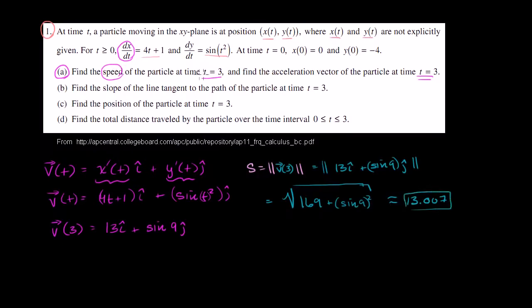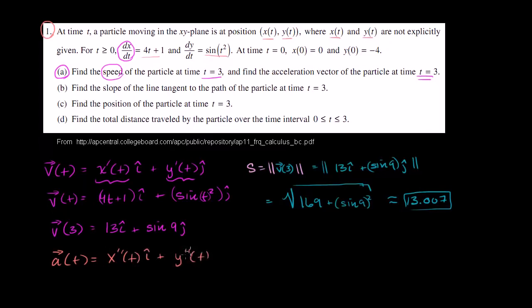Then they want us to find the acceleration vector of the particle at time t equals 3. The acceleration vector as a function of time is the second derivative of x with respect to t times i, plus the second derivative of y with respect to t times j. The second derivative of x is just the derivative of the first derivative, 4t plus 1, and you get 4. So we get 4i plus...